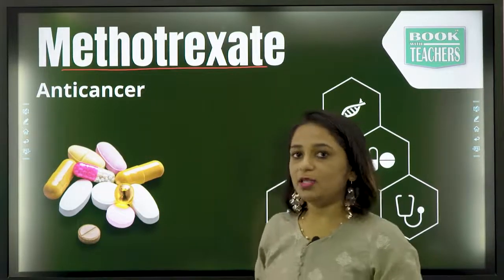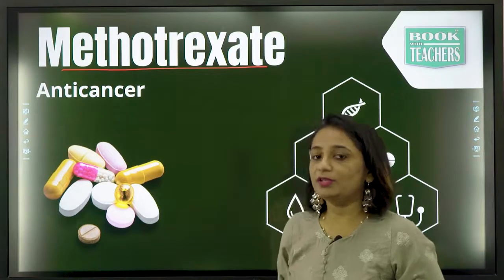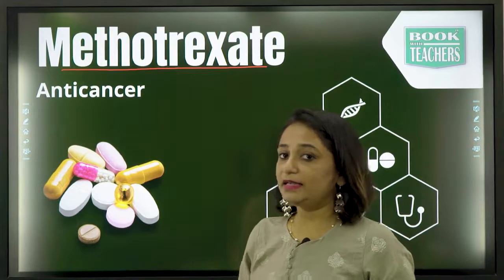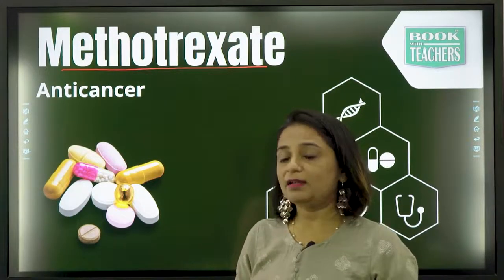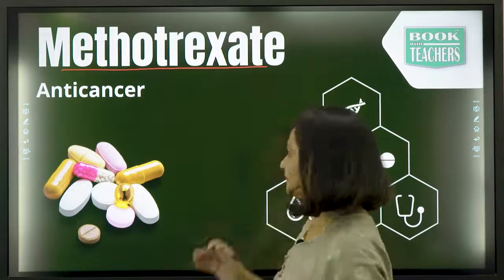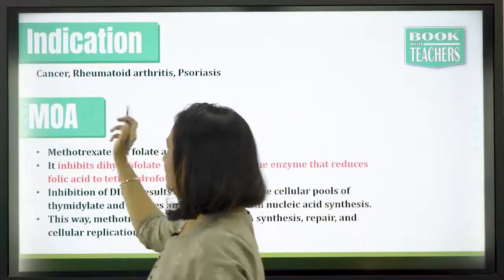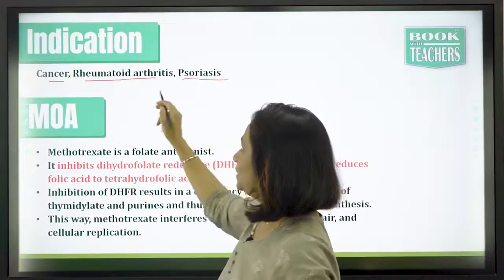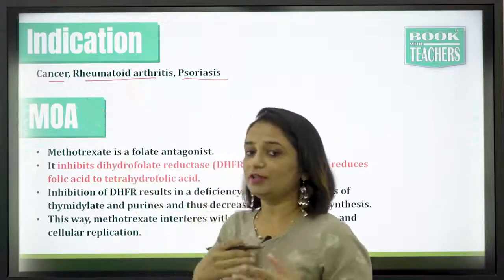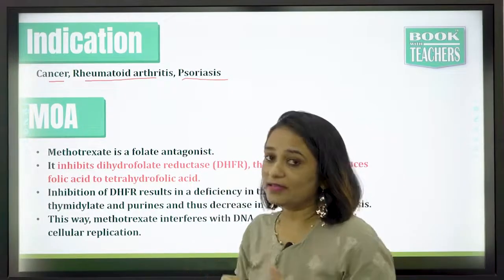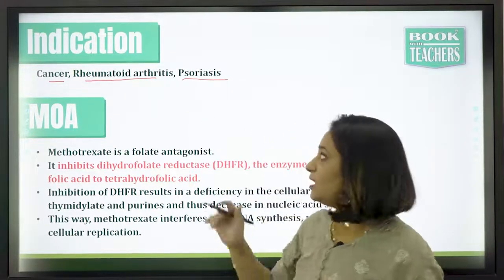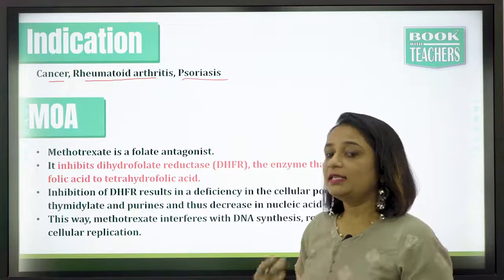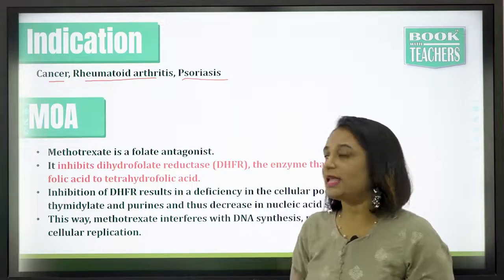This drug belongs to the category of anti-cancer agents. It is used most profoundly in cancerous conditions. It is indicated for the treatment of cancer, rheumatoid arthritis, and psoriasis as well. In cases of joint pain and bone-related conditions it is used, and also in cases of psoriasis, which is a skin condition, methotrexate can be used.